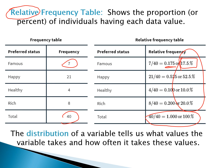When we talk about the distribution of a variable, it's telling us what values the variable can take on and how often those values occur. We can see that from our frequency table, and we can see it as percentages from our relative frequency table.